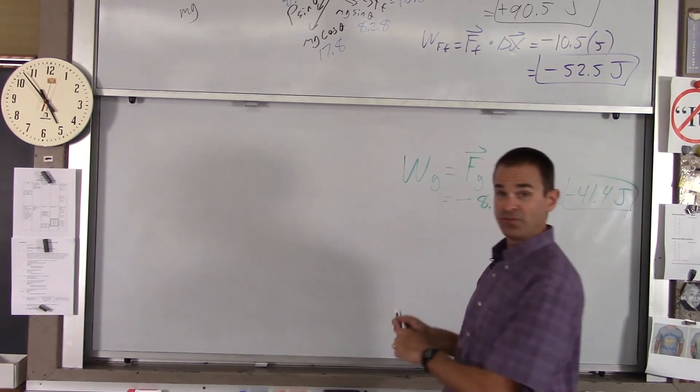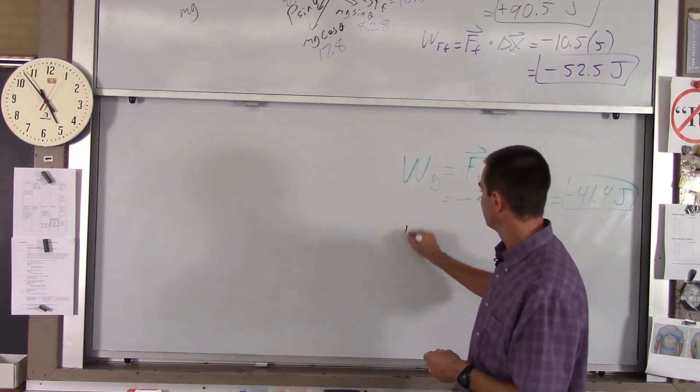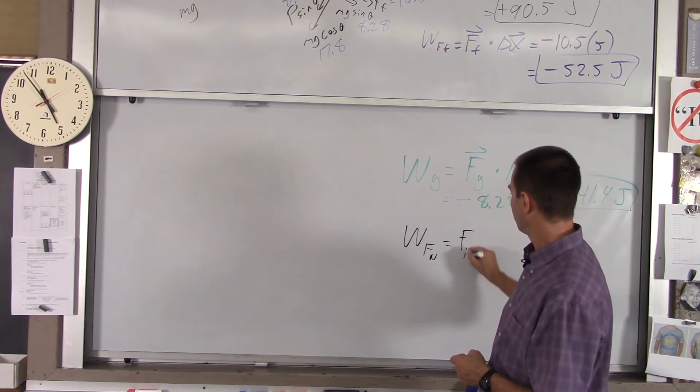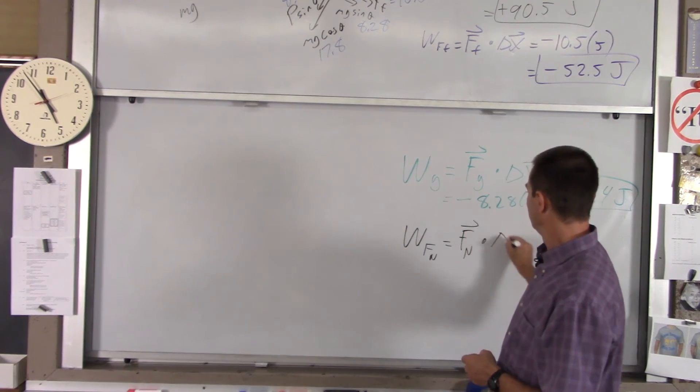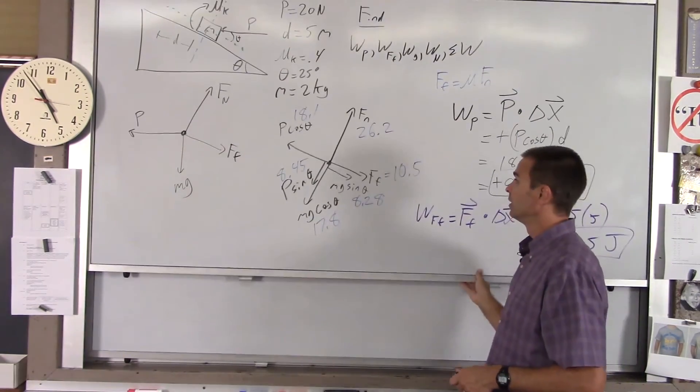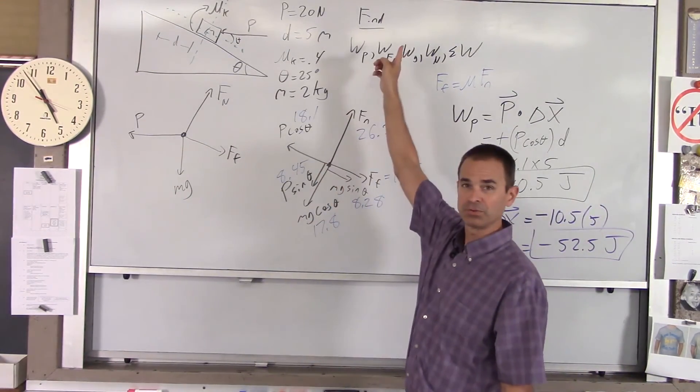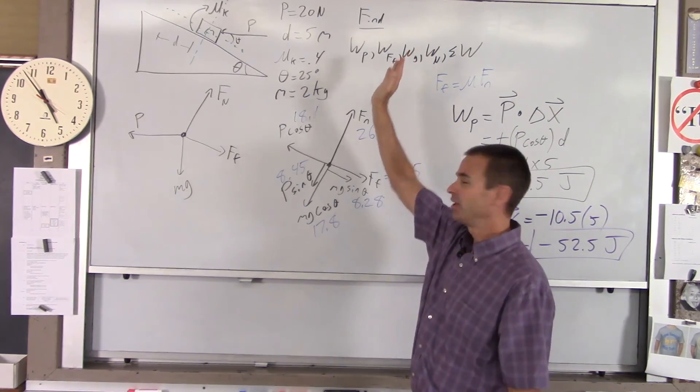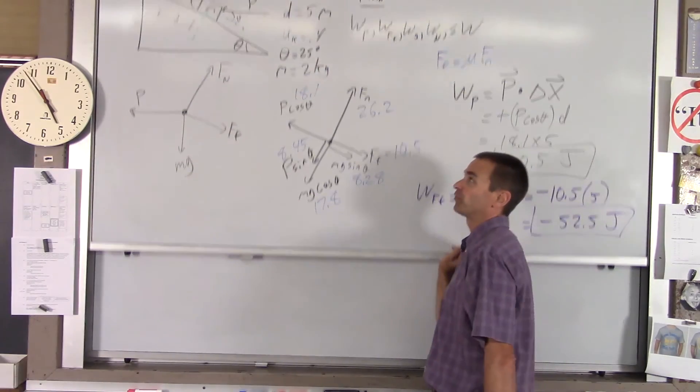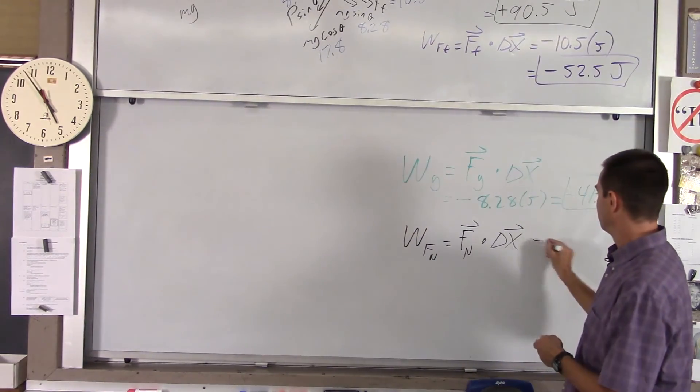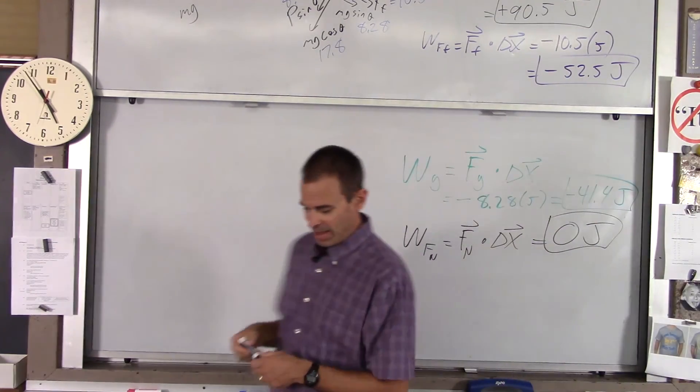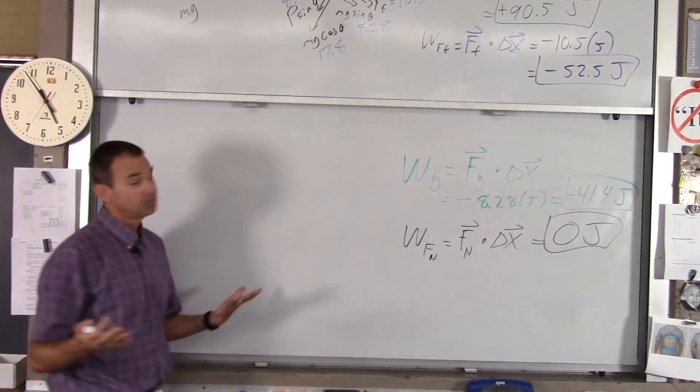The last individual force is the normal force. The work done by the normal force equals the normal force dot delta x. So what's that? Well, the normal force is perpendicular to the motion. That's your answer. Any force that's perpendicular to the motion does no work, so the work done by the normal force is simply zero joules.